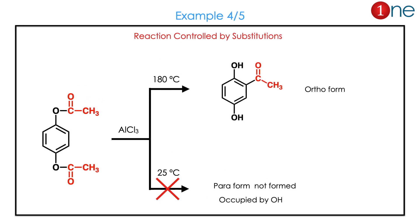In the next question, you have a diester that is para-substituted. Once you use aluminium chloride, rearrangement is possible. But the para position is not possible because it is already occupied. So the ortho position is favored because of the single substitution there.